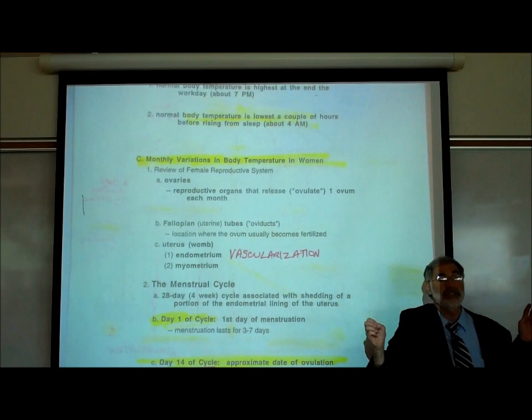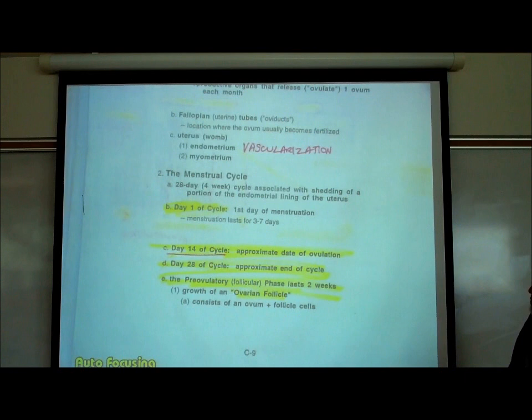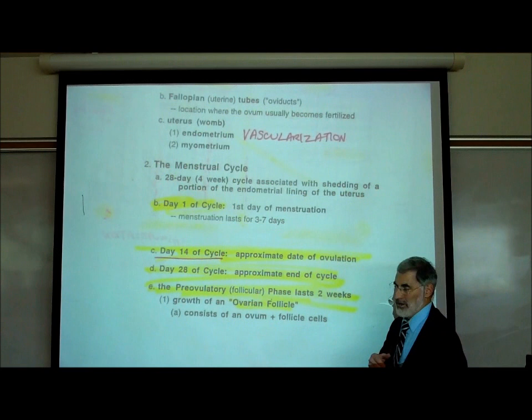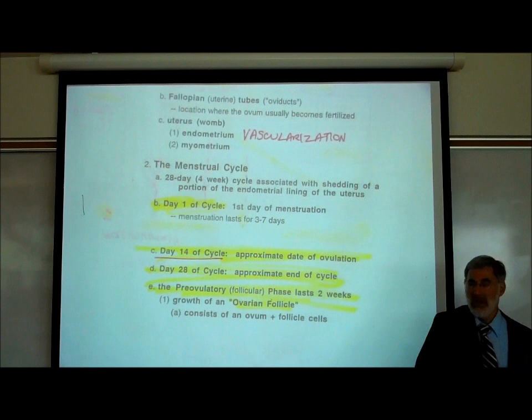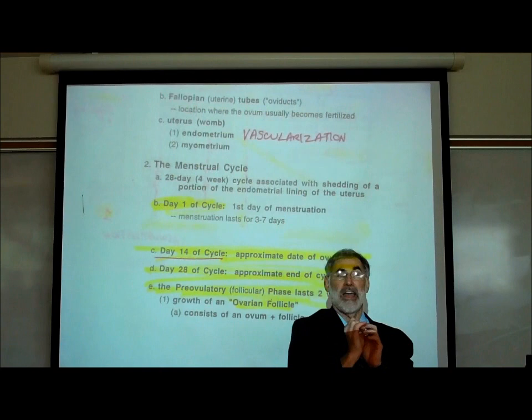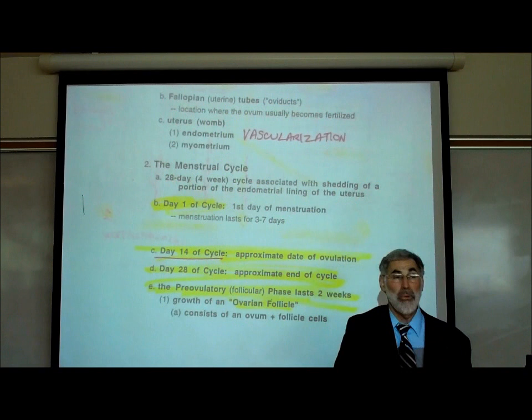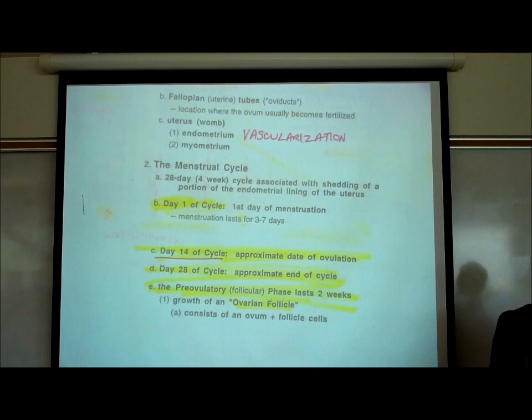The menstrual cycle lasts approximately 28 days — about 4 weeks, one month. It varies: some women have 25-day cycles, some 30-day cycles. Some women are very consistent; others are quite irregular — 25 days one cycle, 30 days another. It's very important for every woman to track her cycles for about three to six cycles to understand how many days each cycle lasts and how consistent they are.